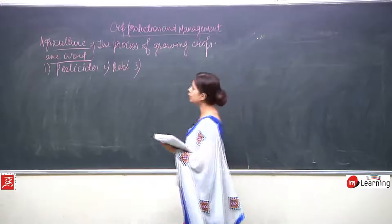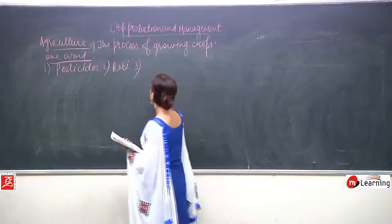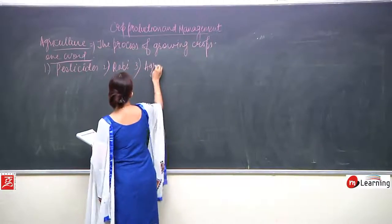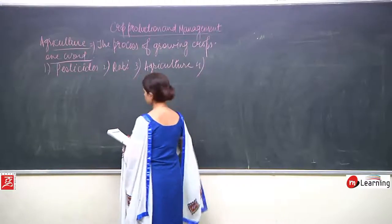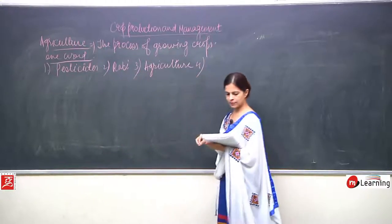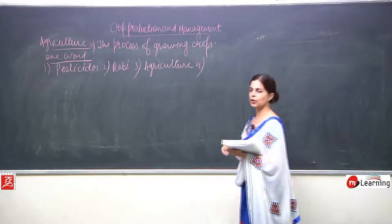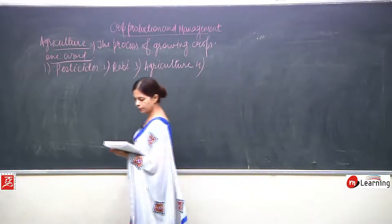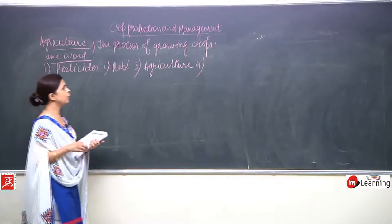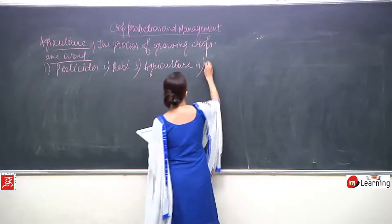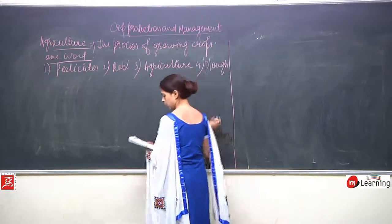The process of growing crops intentionally is agriculture — just as I explained. A tool used to loosen and turn the soil is a plow.